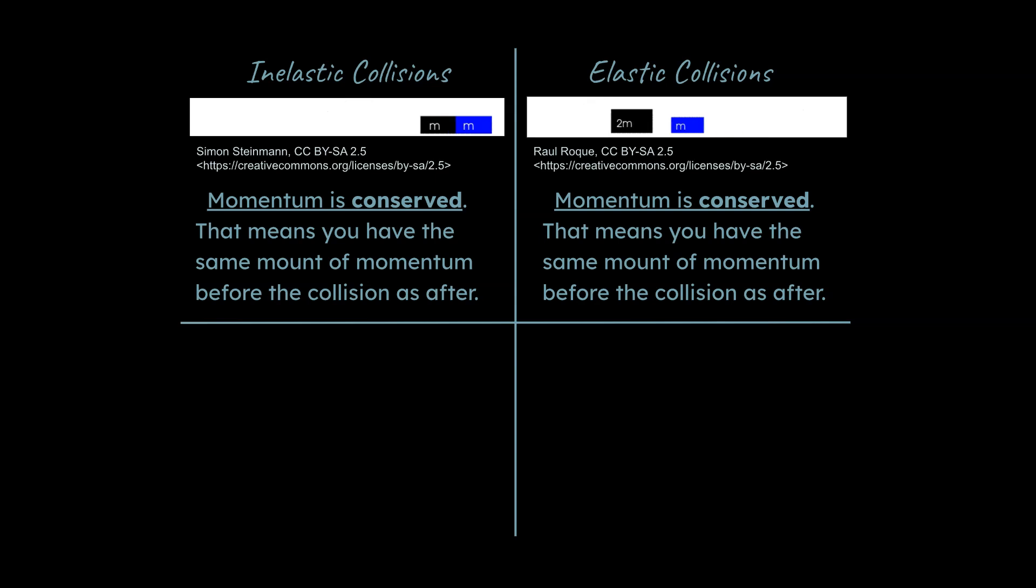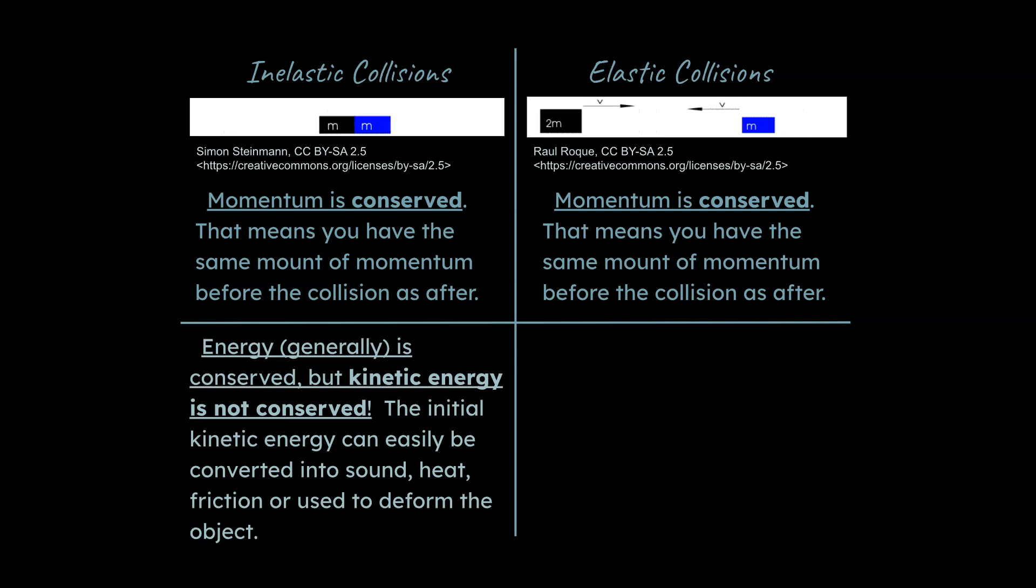And it's true to say that energy is conserved as well, but certain types of energy are not conserved. In other words, in an inelastic collision like you see in the upper left up here, the kinetic energy of the objects initially are not the same as the kinetic energy of the objects finally. So you could say, well what happens to the kinetic energy? Well in the event of an inelastic collision, some of that energy is lost as heat or friction or possibly deformation of the object if you're talking about like a car crash or something like that.